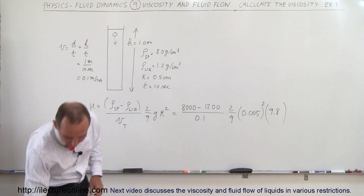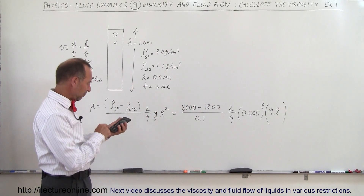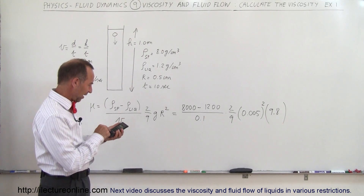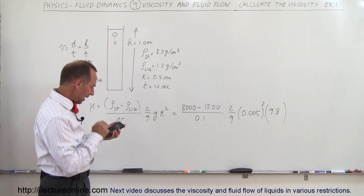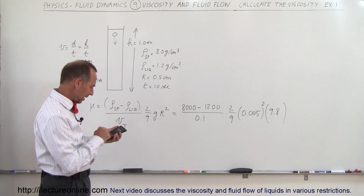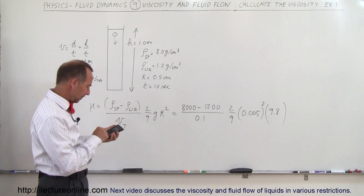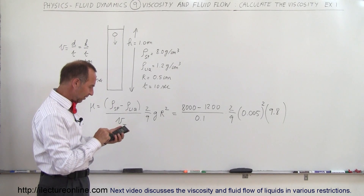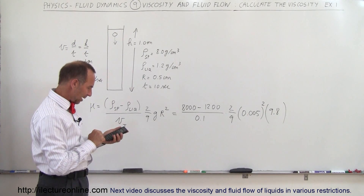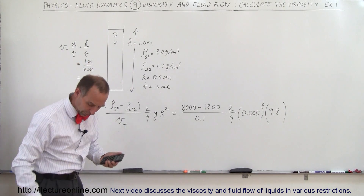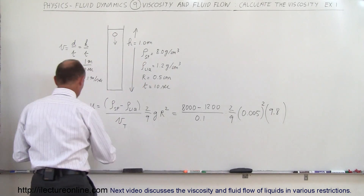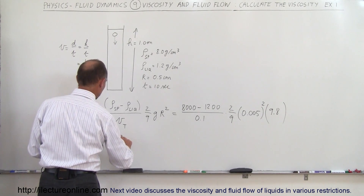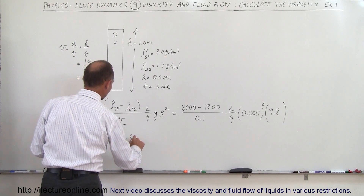Okay, now with the calculator — let's compute: 0.005 squared, times 2 divided by 9, times 9.8, times the difference of those two densities which is 6,800, divided by 0.1. The result: mu is equal to 3.7 Pascal-seconds.